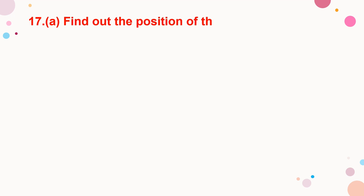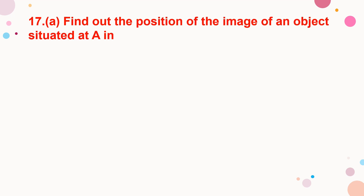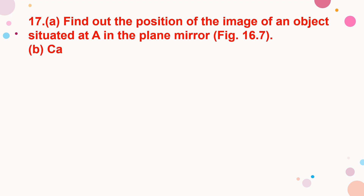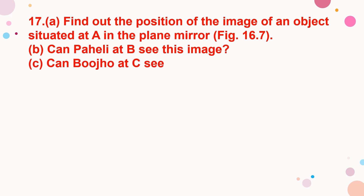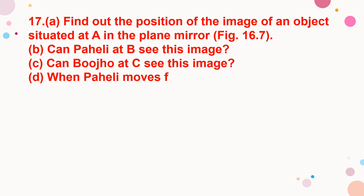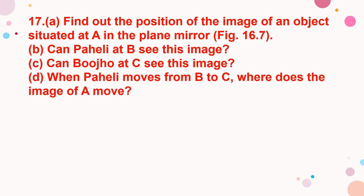Find out the position of the image of an object situated at A in the plain mirror. Can Peheli at B see his image? Can Bojo at C see this image? When Peheli moves from B to C, where does the image of A move?